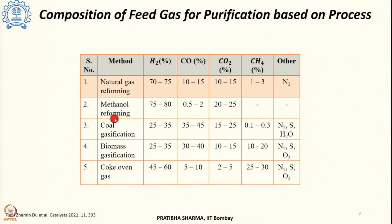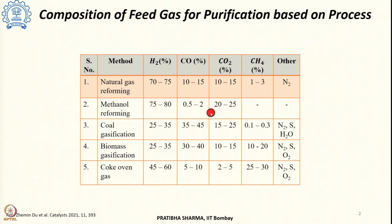In methanol reforming, 75 to 80% is hydrogen, 20 to 25% is carbon dioxide and a small amount of 0.5 to 2% of carbon monoxide.